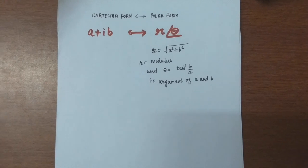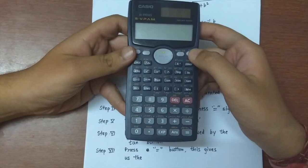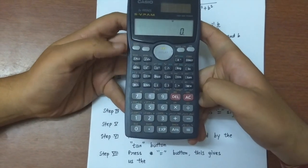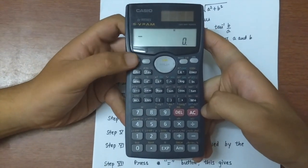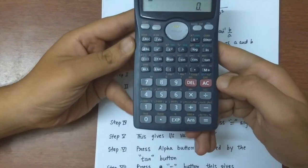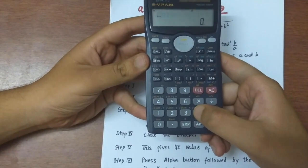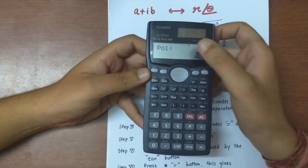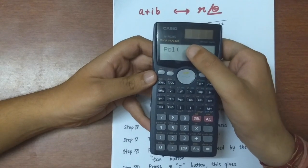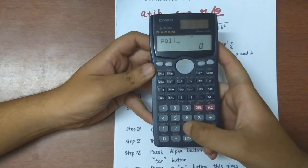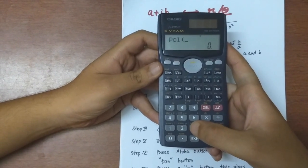First, I'm going to show you how to convert Cartesian coordinates into polar coordinates. Power on the calculator. Press the Shift button at the top left corner. To convert Cartesian to polar form, press the plus sign button. As you can see, the word 'Pol' — which stands for Polar — appears with an opening bracket on the screen. Where the cursor is blinking, we'll feed the Cartesian coordinates, and remember they should be fed with a sign.